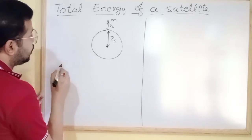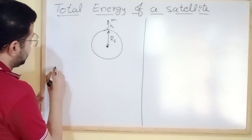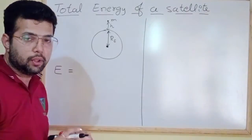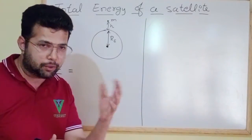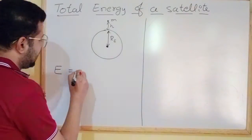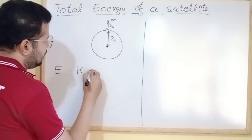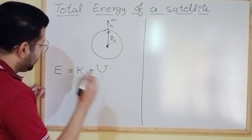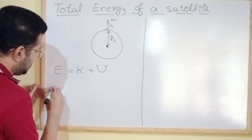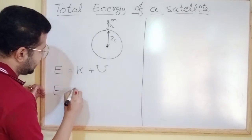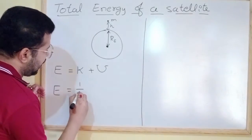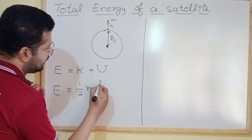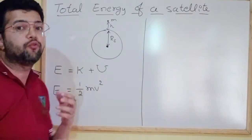So in general, how do we calculate total energy? Total energy of the satellite is equal to kinetic energy of the satellite plus potential energy of the satellite. Kinetic energy of the satellite is equal to half mv squared.